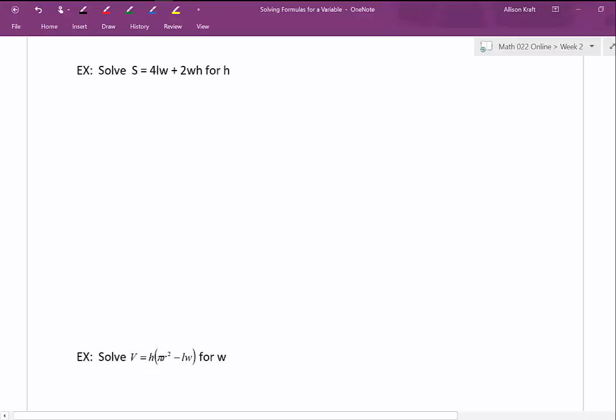Next we want to solve S equals 4LW plus 2WH for H. A parallel type of problem without all the variables would be 10 equals. Now this term, since it doesn't contain an H, we can think of that whole term as a constant. And this 2W right here, we can think of it as just a constant. If we were to be solving this equation for H, our first move would be to subtract 4. So that's what we're going to do on our original problem.